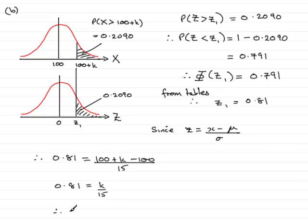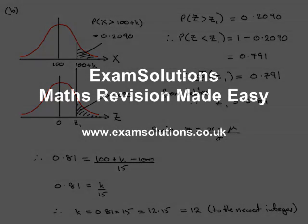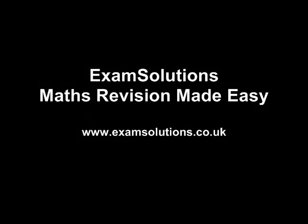And to work out K, all I've got to do is multiply both sides by 15. So K equals 0.81 times 15, and that comes to 12.15. We're asked to quote K to the nearest integer, so this will equal 12 to the nearest integer. And that brings us to the end of part B and to the end of this question. Thank you.